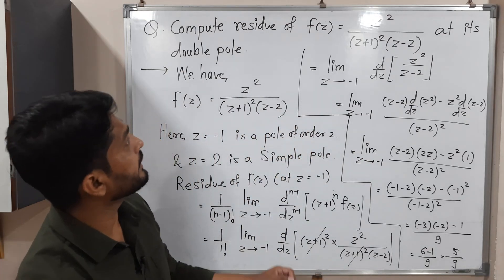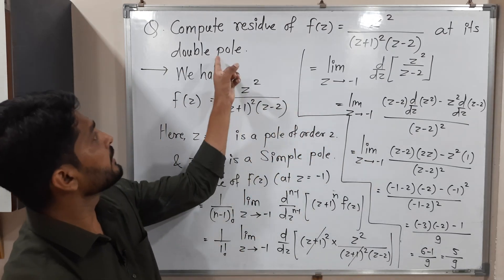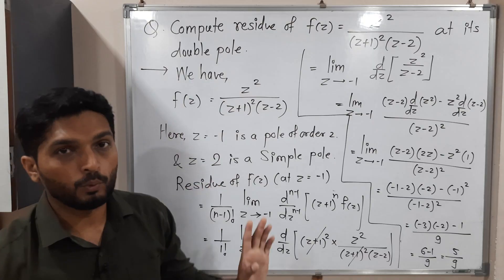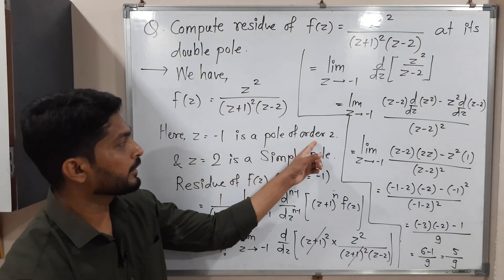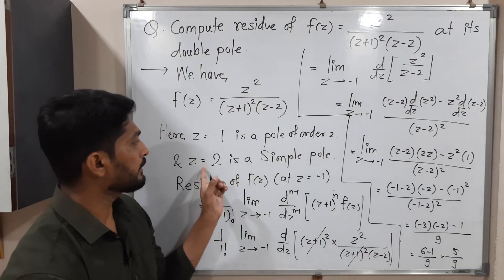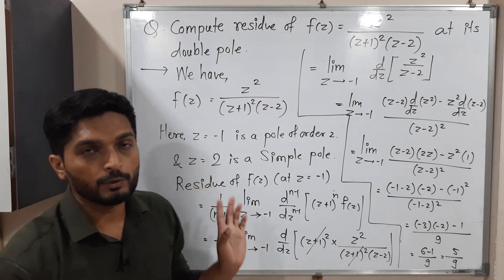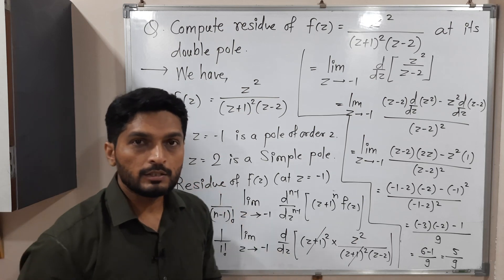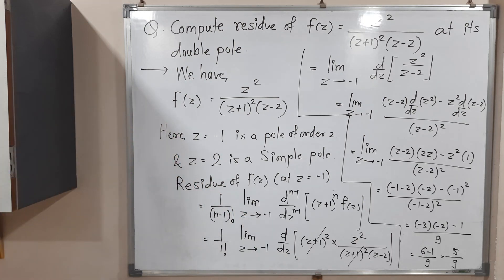In this way, we calculated the residue at its double pole. They asked to find residue only at the pole of order 2, so we did not find the residue at z = 2. In this way, we have finished this problem. Thank you, see you in the next video.